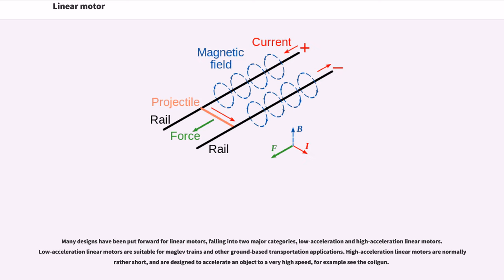Many designs have been put forward for linear motors, falling into two major categories: low-acceleration and high-acceleration linear motors. Low-acceleration linear motors are suitable for maglev trains and other ground-based transportation applications. High-acceleration linear motors are normally rather short and are designed to accelerate an object to a very high speed, for example, see the coil gun.